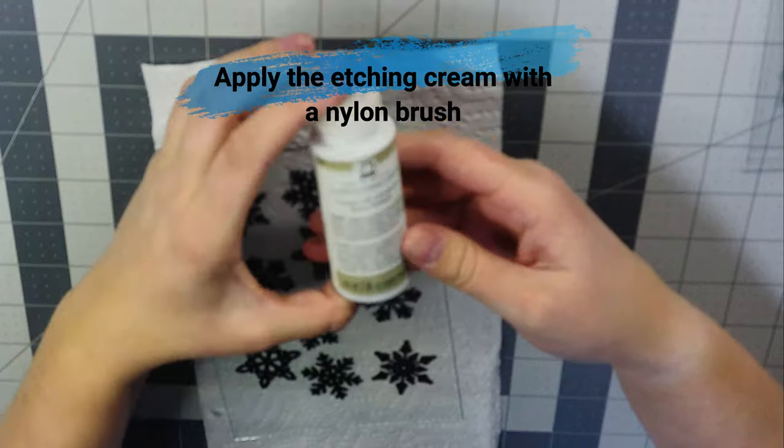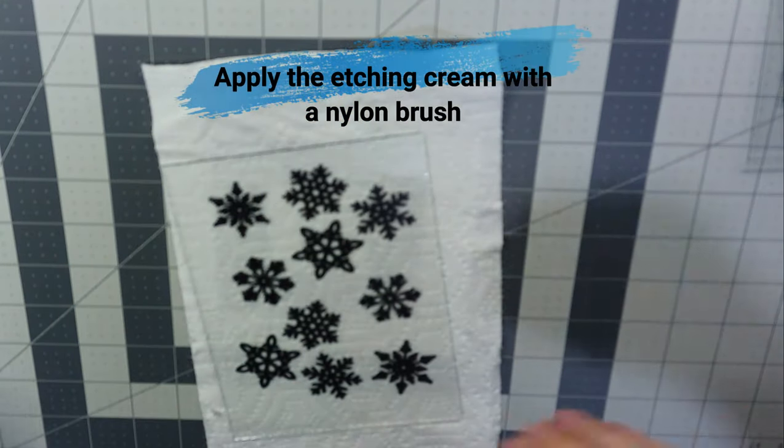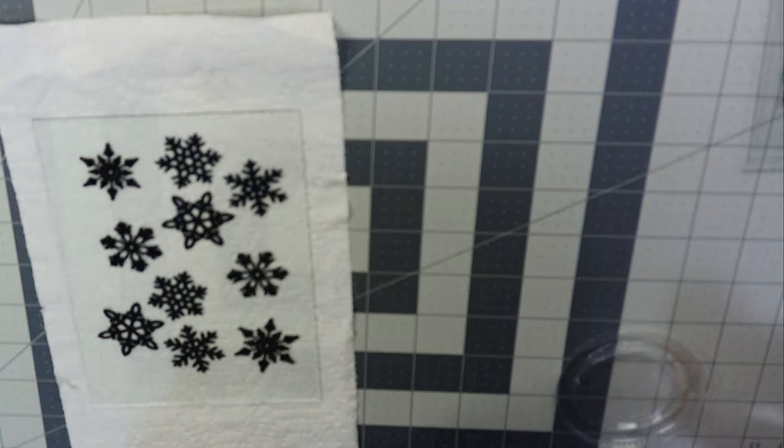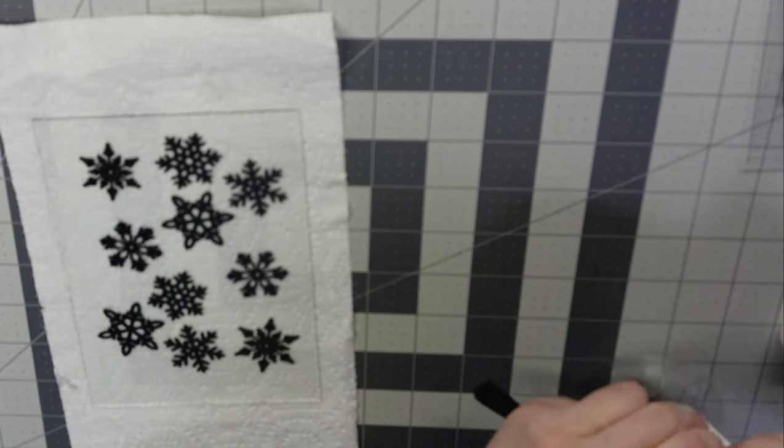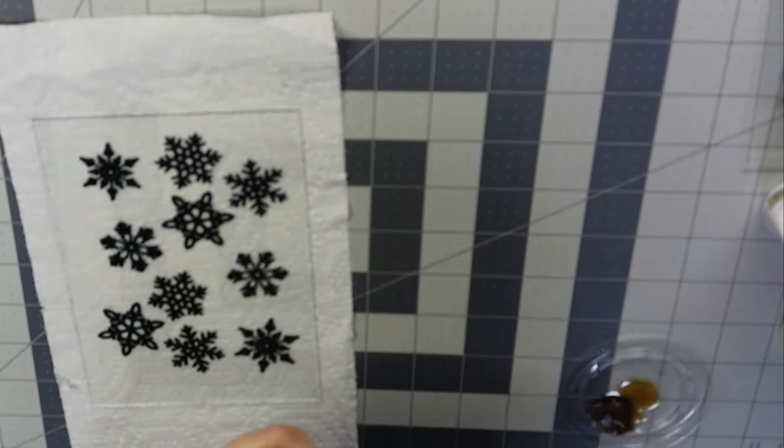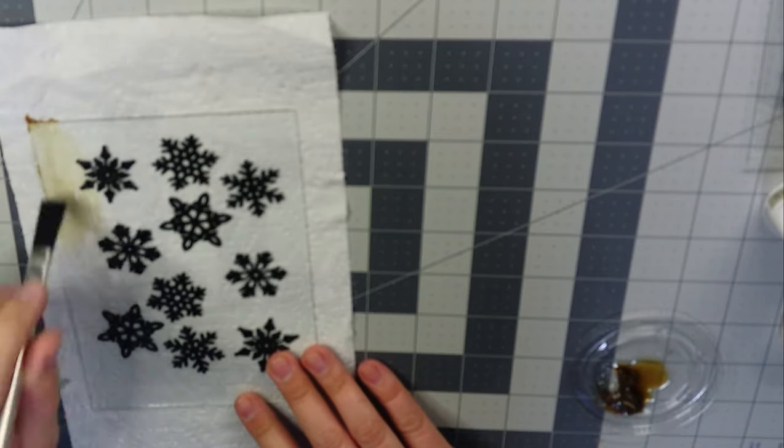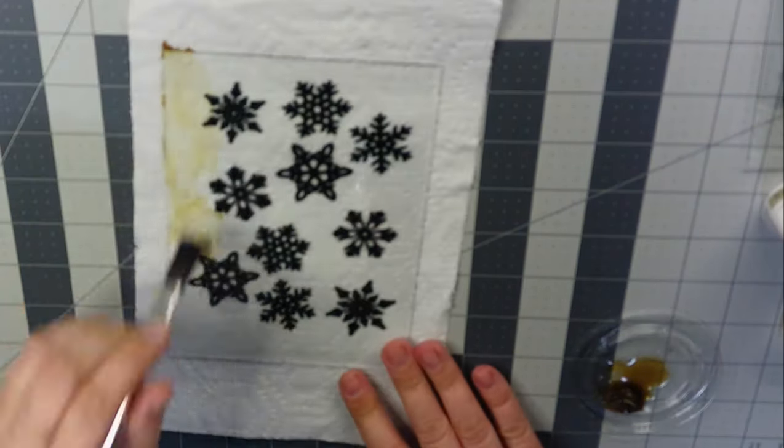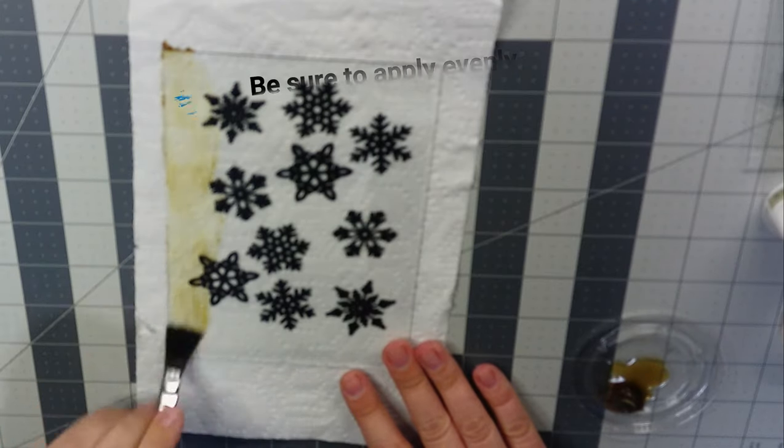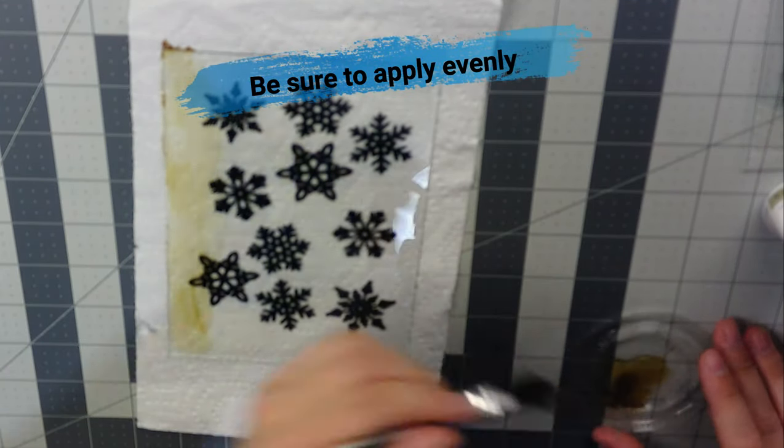Now you want to get your etching cream out and you are going to use a nylon brush to generously apply the cream to the glass.